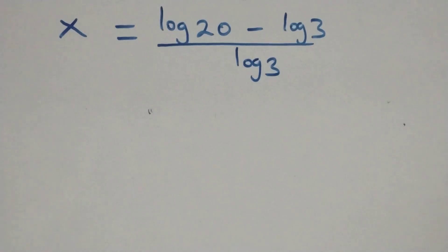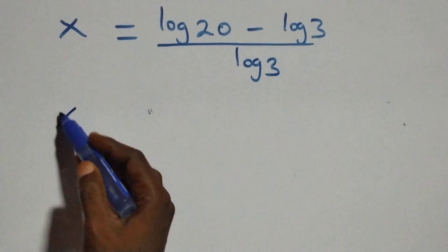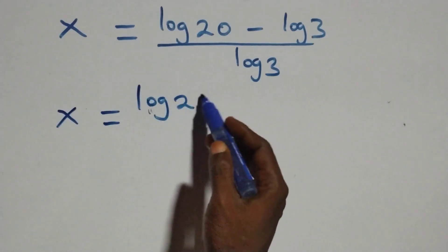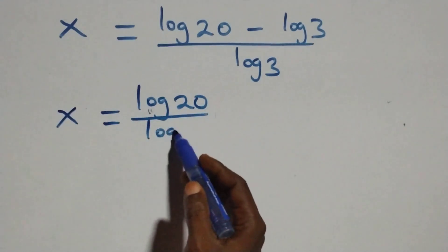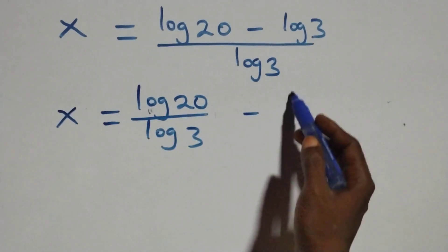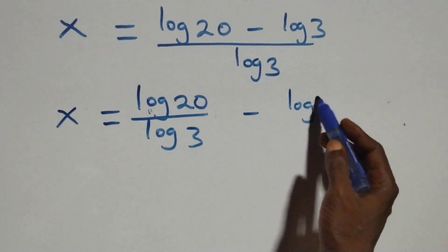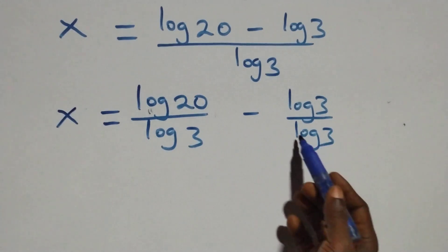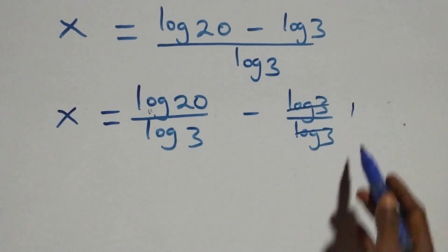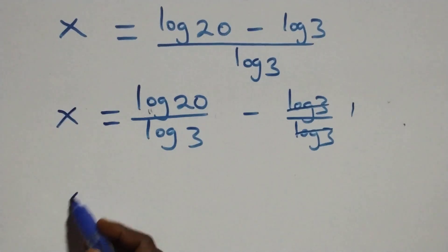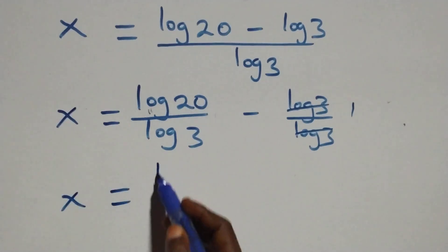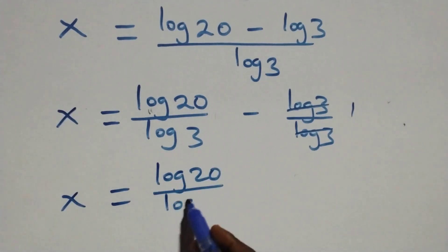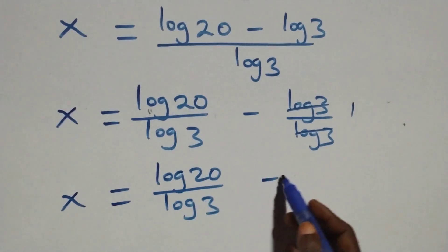The next step: we separate this into two fractions. We have x equals log 20 over log 3, minus log 3 over log 3. The log 3 over log 3 cancels to 1, which implies x equals log 20 over log 3 minus 1.